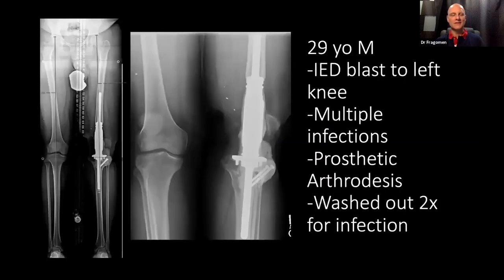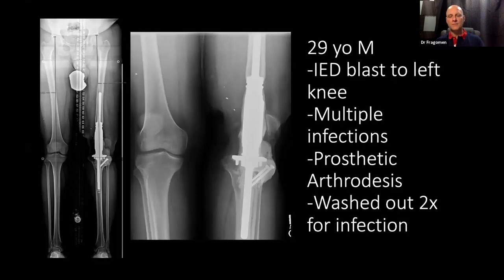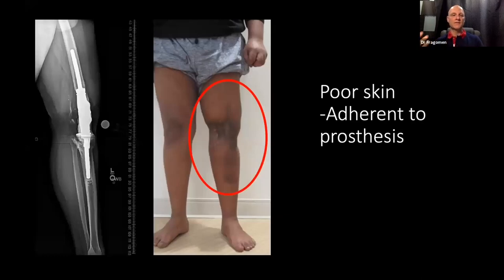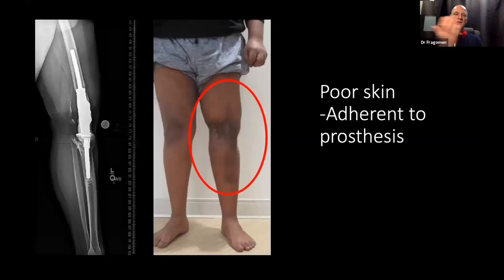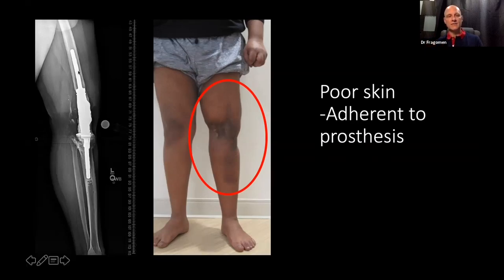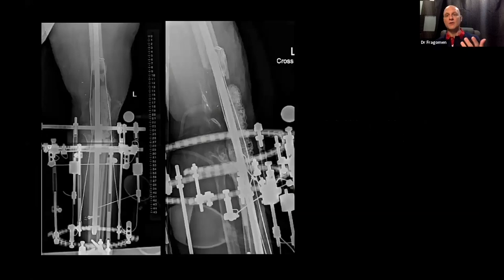Cable transport over nail is a really interesting tactic. I utilized this on a patient who basically had no knee — a megaprosthesis that got infected in a 29-year-old. Once you have an infected knee replacement in a young person, it's either amputation or fusion, and that's not a simple decision. After much discussion and meeting with amputees, this patient felt very strongly about not having an amputation. The idea was to get rid of all the infected metal and fill the defect with bone using cable transport over nail.